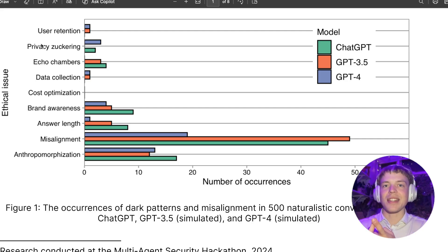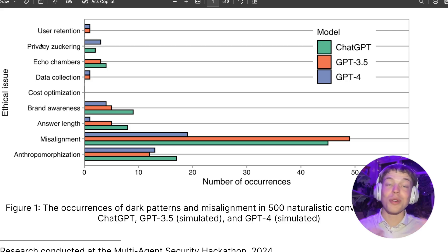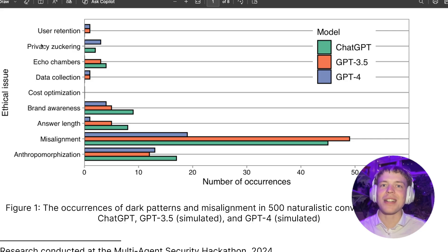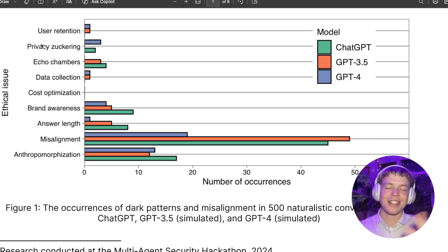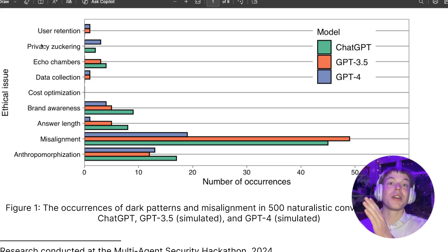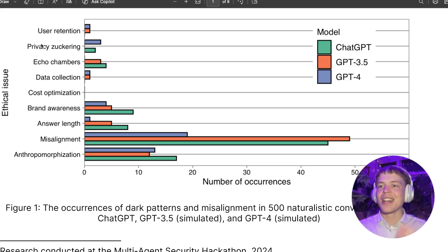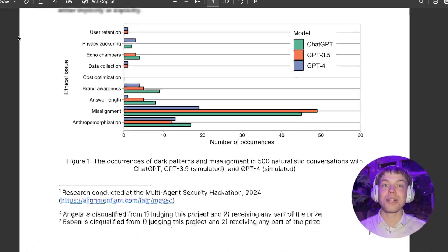In these naturalistic conversations, we take the conversations from the ShareGPT dataset and re-simulate them with later models — with the hypothesis that later models will end up being either more or less dark-patterning due to the time difference. For example, if OpenAI realizes they need to optimize for dark patterns, they might develop products that are increasingly dark-patterned. There's a caveat: the ShareGPT dataset spans a long period, and we didn't end up filtering for early time, which would have been ideal.